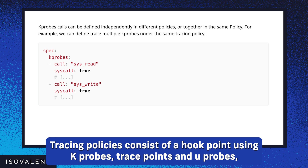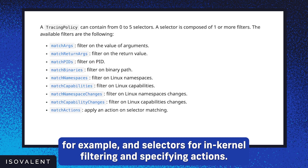Tracing policies consist of a hook point using k-probes, trace points, and u-probes, for example, and selectors for in-kernel filtering and specifying actions.